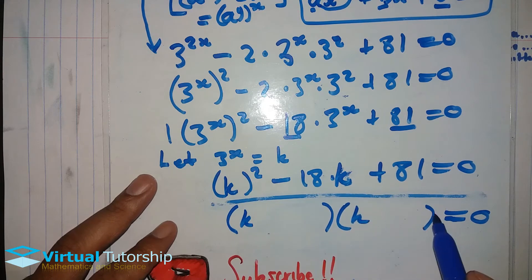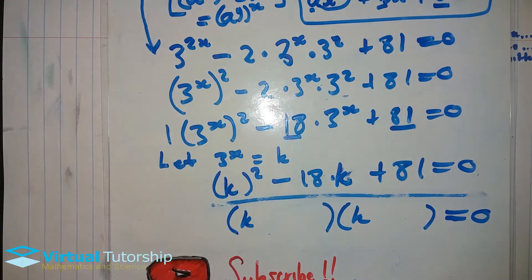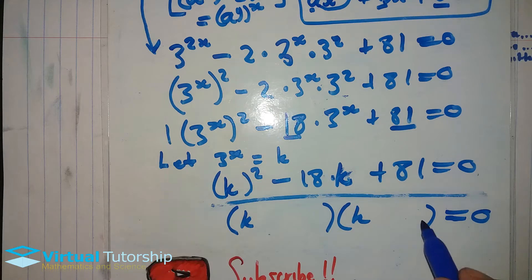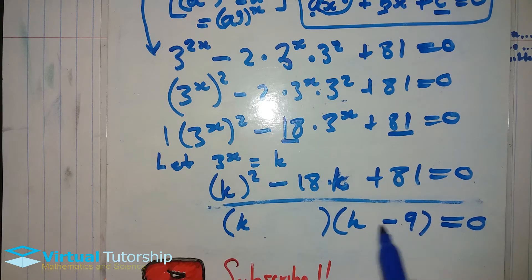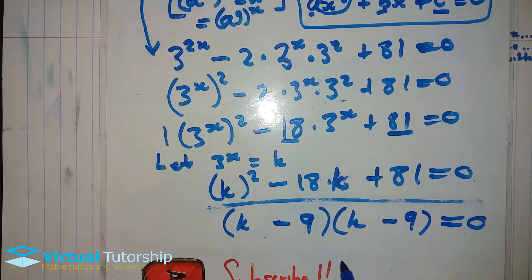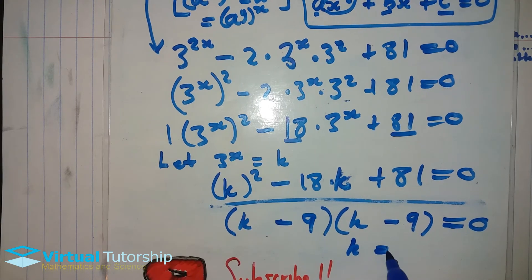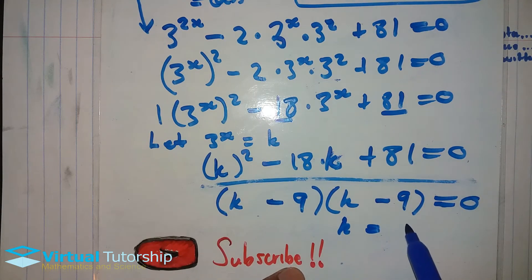So it's going to be k squared — the factors of 81. Working it out: it's going to be minus 9 and minus 9. So k equals 9, or k equals 9. So k is equal to 9.